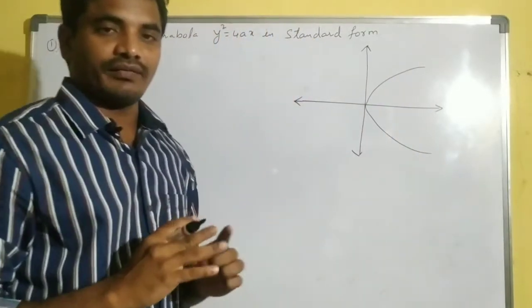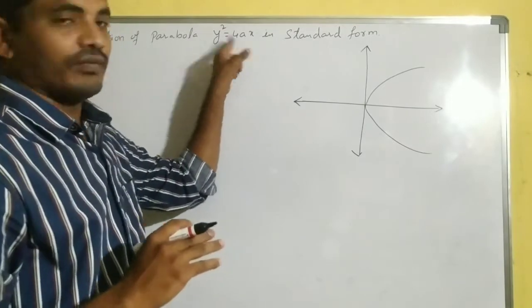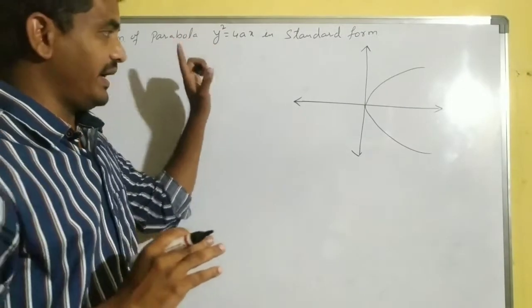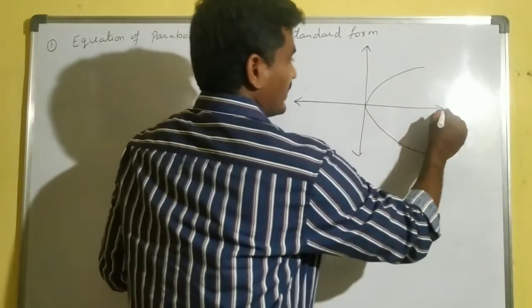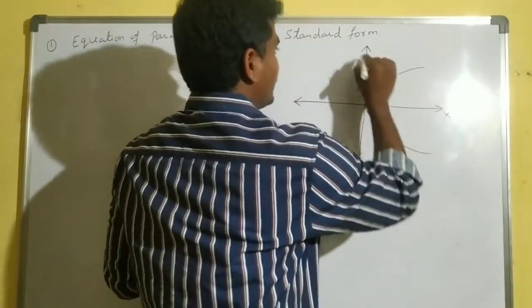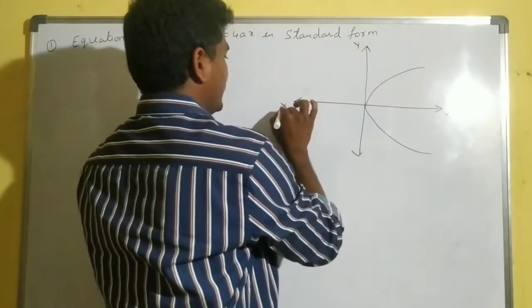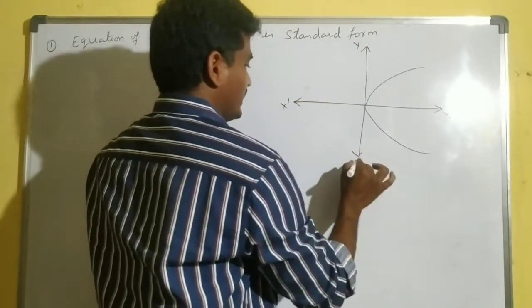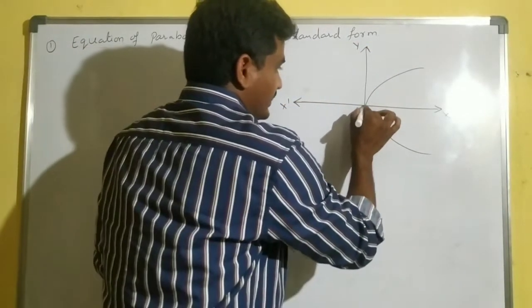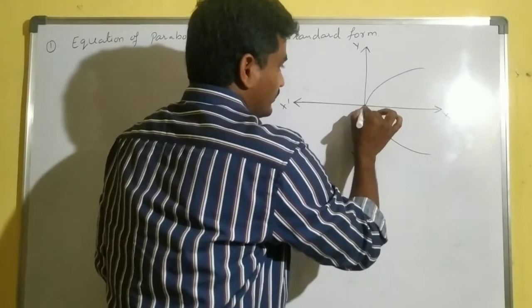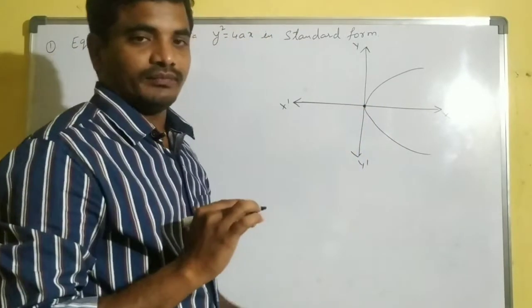Here I am taking one rough figure for y² = 4ax. I am taking the x-axis and y-axis, x-dash and y-dash. This is the vertex of the parabola.